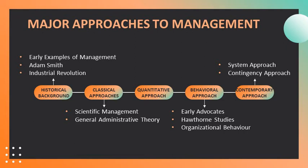The second important contributor in General Administrative Theory is Max Weber. He emphasized rationality, predictability, impersonality, technical competence, and authoritarianism. According to Max Weber, a bureaucracy should have division of labor, authority hierarchy, formal selection, formal rules and regulations, impersonality, and career orientation.